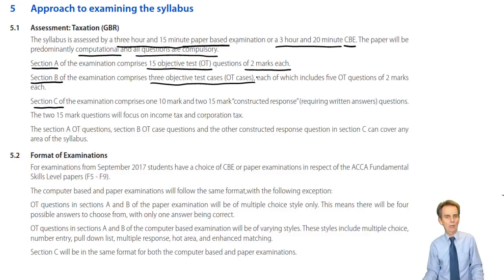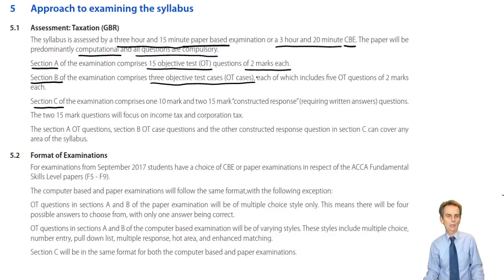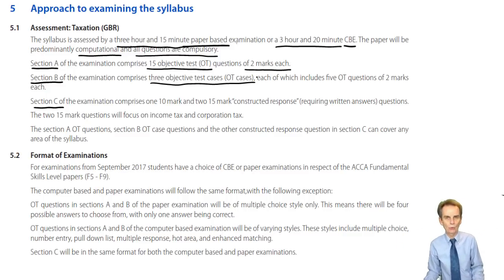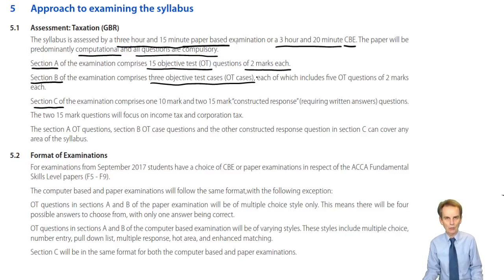Section B is again about objective testing questions, but this time we have three case studies. Here is the case study, here is information pertaining to the individual, company, or business, and here are five individual objective testing questions with very specific requirements — five of them, each carrying two marks, for ten marks per case study question. Section C will contain three written questions: two of those carry 15 marks — one on income tax and one on corporation tax. The other question, we'll talk about in a moment.